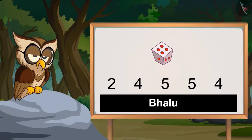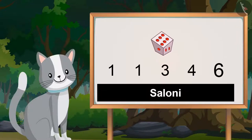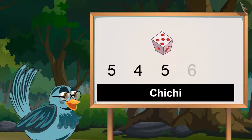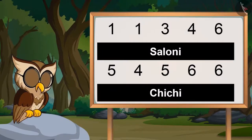Now Chichi and Asaloni, turn-wise roll the dice and see what numbers you get. One, one, three, four, six. Five, four, five, six, six. So Chichi and Asaloni got these numbers on the dice.